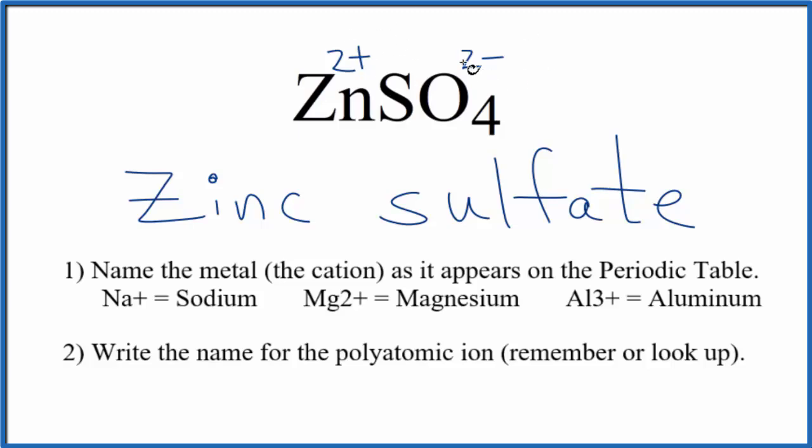These two, they balance out, give us a net charge of zero. So we just need one zinc atom and then one sulfate ion for ZnSO4. This is Dr. B with the name for ZnSO4, zinc sulfate. Thanks for watching.